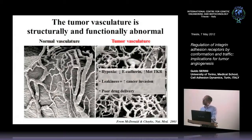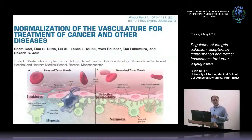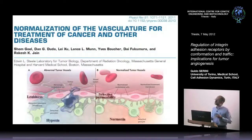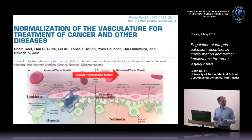That is the reason why we want to understand the molecular basis of this disruption. We think that alterations in the interaction between the endothelium and the extracellular matrix could be crucial to cause this abnormal vasculature. In the last 10 years, work mainly from the lab of Rakesh Jain in Boston suggested that a good approach in cancer therapy could be to normalize these abnormal blood vessels, making the identification of vascular normalizing factors a key goal.